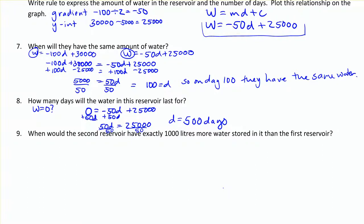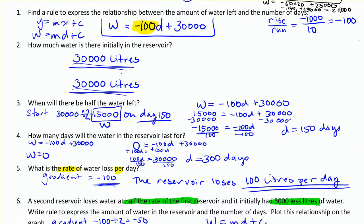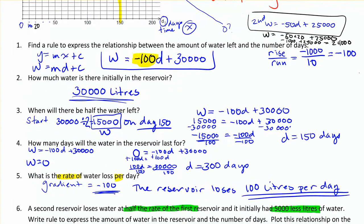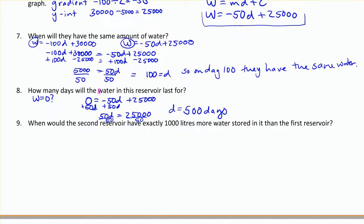Next question. When would the second reservoir have exactly 1,000 liters more water stored in it than the first reservoir? Let's look at the graph to figure out what we're talking about here. When will the second reservoir have exactly 1,000 liters more in it than the first reservoir? So what I'm looking for is when there's a distance between these two lines of 1,000. But I want to make sure it's when I have the second reservoir with more water. So I'm looking for a distance of a spot where they have exactly 1,000 between them. And that might be hard to read. It looks like I can actually read it off the graph there that that looks like the spot. So that would be day 120. But let's prove this. Let's use our algebra and show how we can solve this if we're not able to read it off the graph.